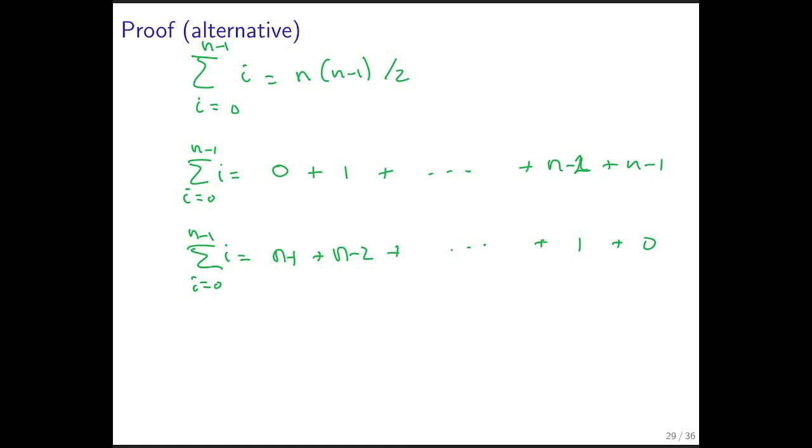Now, if I add this to that, what I get is 2 times the sum from i equals 0 to n minus 1 of i. And if I add all of these to that, I can add the individual terms here, corresponding terms here, and then add the result of those together.